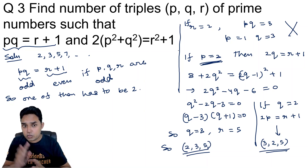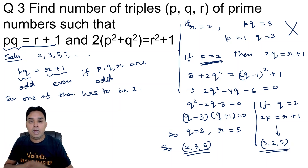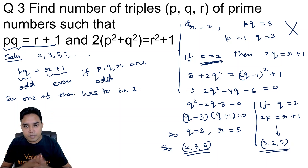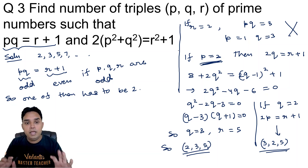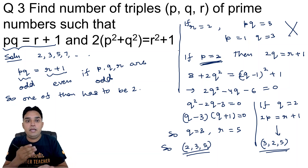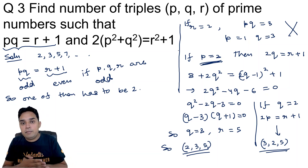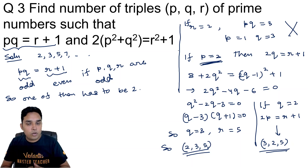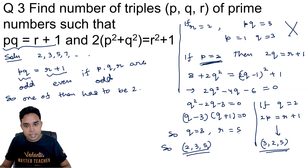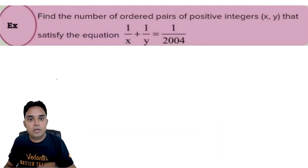This question is from a previous year RMO, around 2010. It was not difficult at all if you understand parity — how even and odd results arise from multiplication and addition. From that, you can rule out several possibilities and arrive at these two triples as the answer.